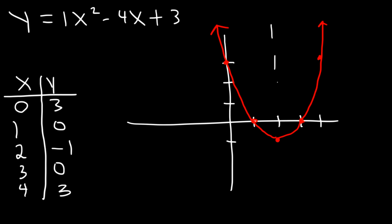We can see that the axis of symmetry is x equals 2, the x-coordinate of the vertex. The minimum value is negative 1.